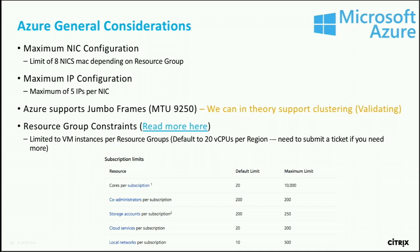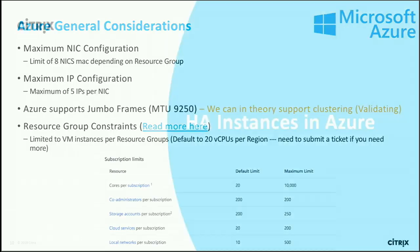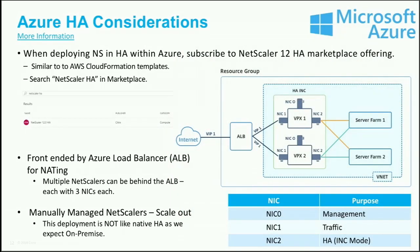Azure does support jumbo frames, and we're working on a clustering solution for NetScaler within Azure. Until that's available, there are other ways to scale NetScaler in Azure, including expanding back-end services automatically. For the HA setup, we like to see the management interface have its own dedicated VNet so that traffic doesn't get confused or mixed up with other IPs on the network.